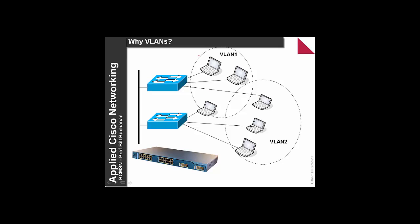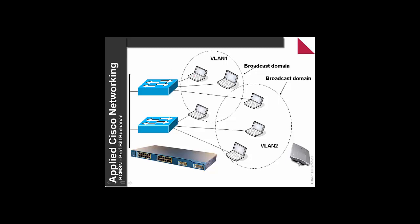VLANs allow us to create networks across multiple switches. These machines need to be connected together in one LAN, but this machine connects to a different switch. Through trunking, it is possible for us to span VLANs across switches. Even though these three machines connect to the same switch, they are not connected to the same network. VLAN 2 can be spanned across the various switches — what we need is a trunking backbone. When a broadcast happens from one node, it will be sent to all other nodes in the VLAN, and not to another VLAN.